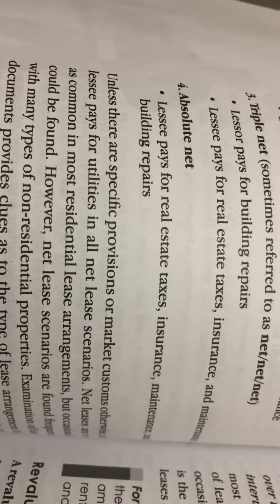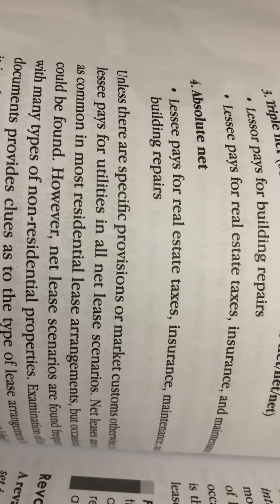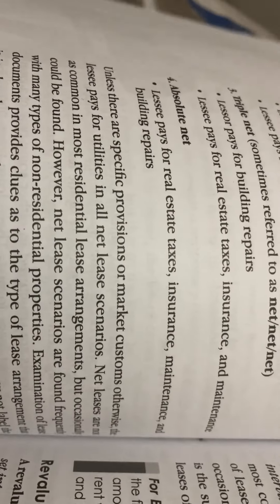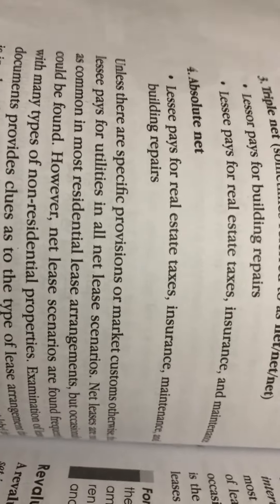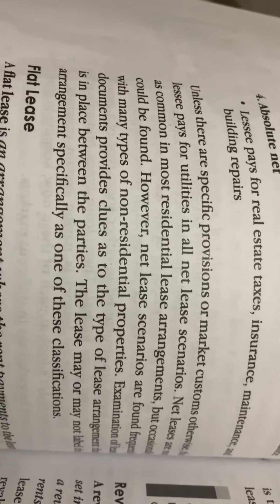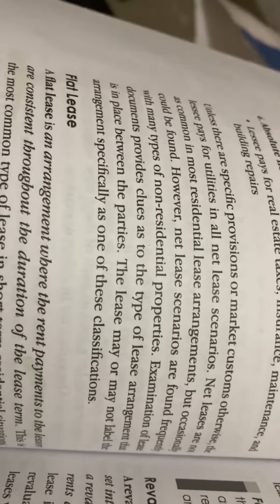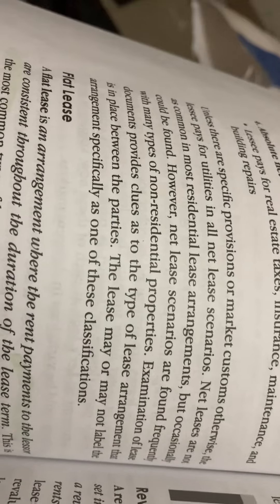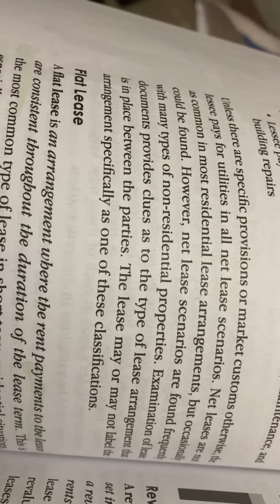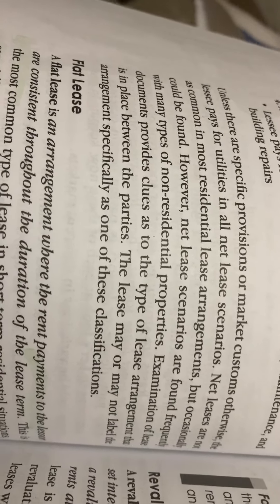And number four, absolute net. The lessee pays for real estate taxes, insurance, maintenance, and building repairs. Unless there are specific provisions or market customs otherwise, the lessee pays for utilities in all net lease scenarios.